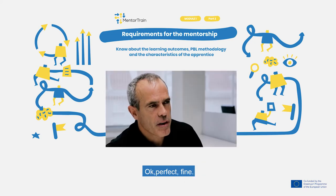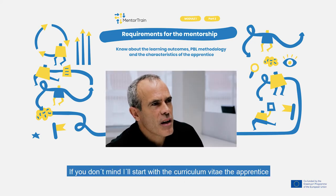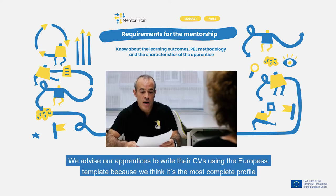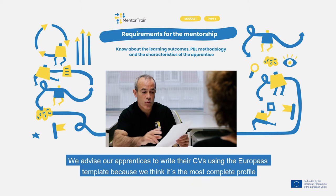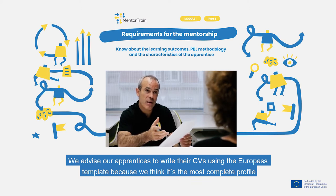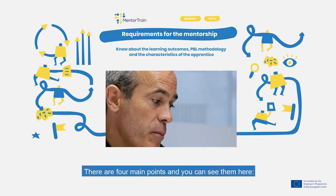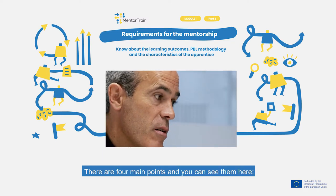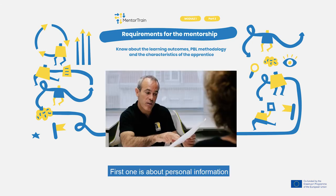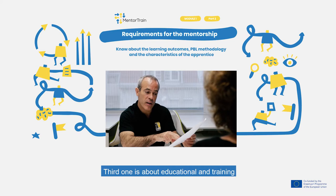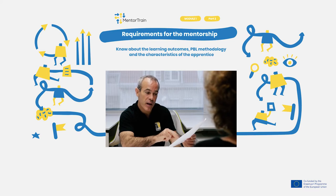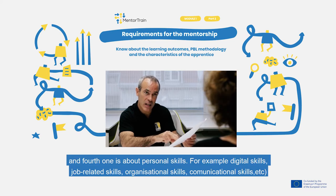Okay, perfect. If you don't mind, I will start with the curriculum vitae of the apprentice. We advise our apprentices to write their CVs using the Europass template because we think it's the most complete profile. There are four main points: the first is about personal information, the second is about work experience, the third is about education and training, and the fourth is about personal skills.